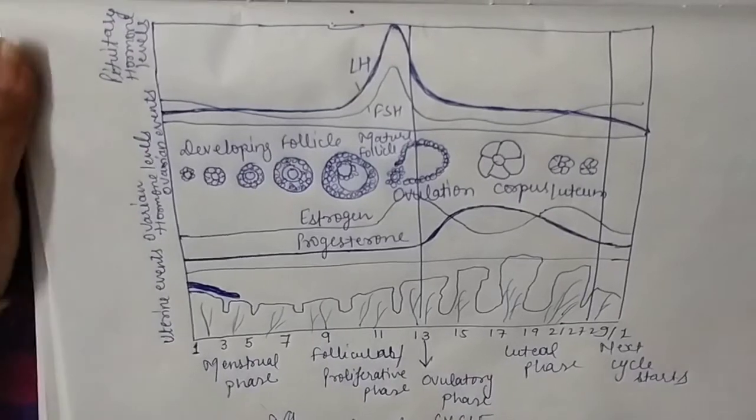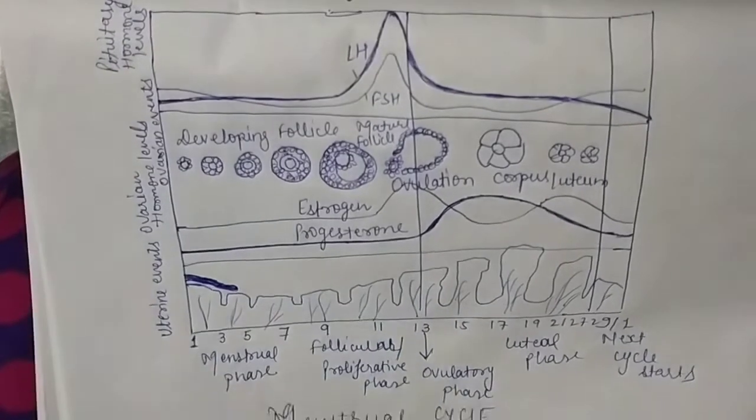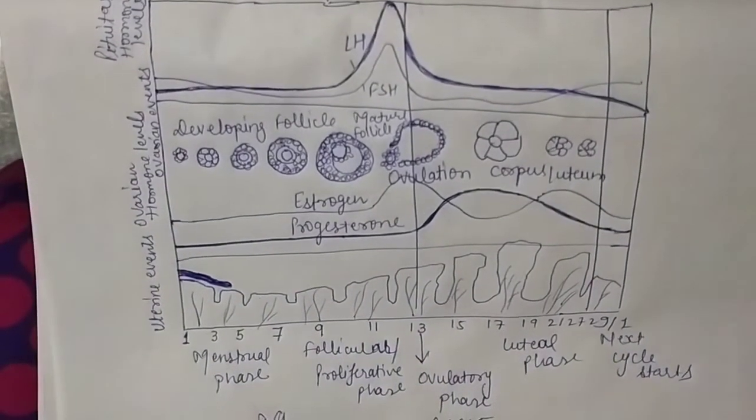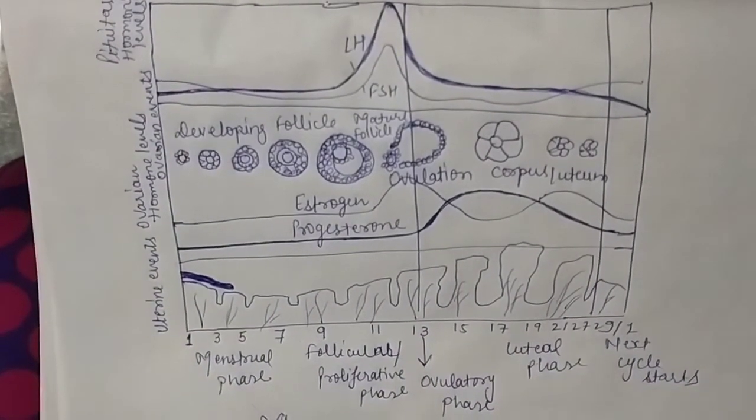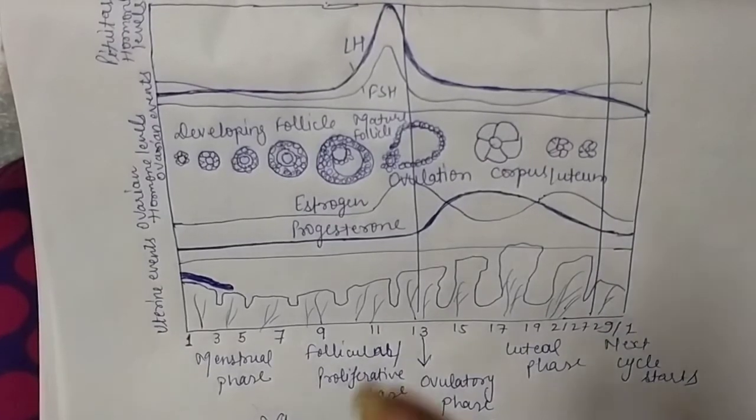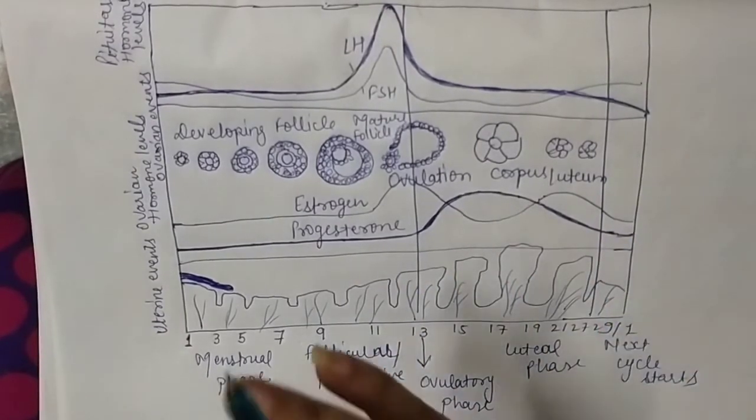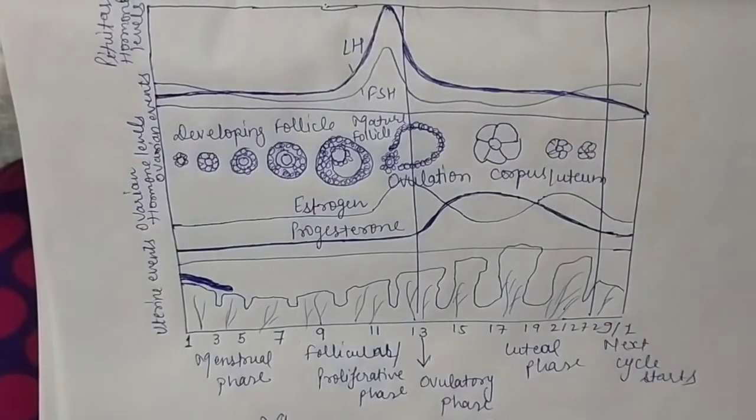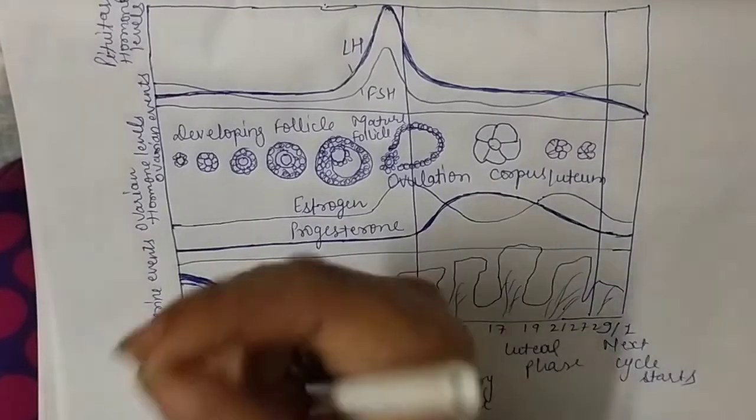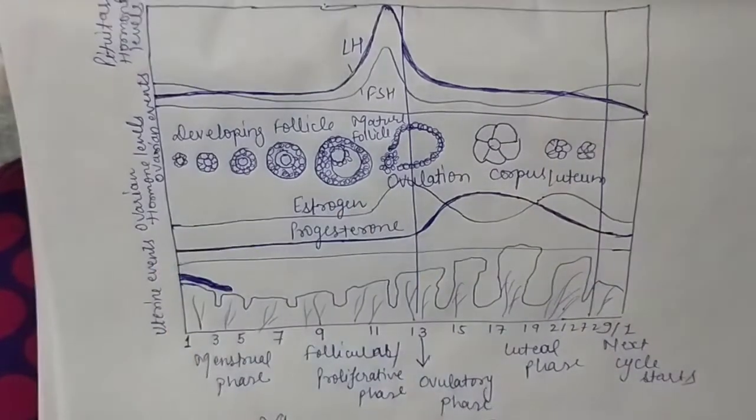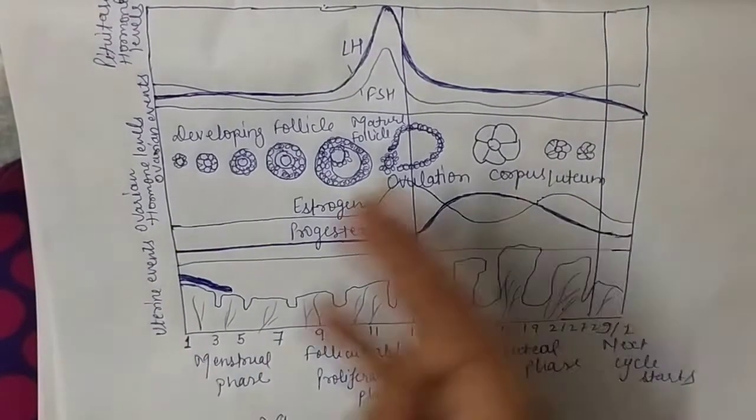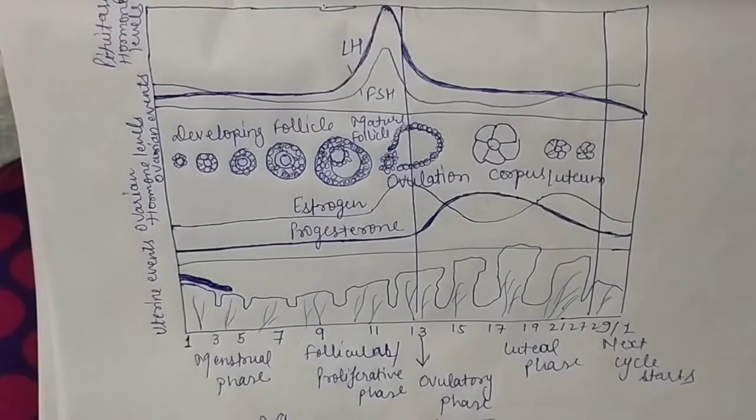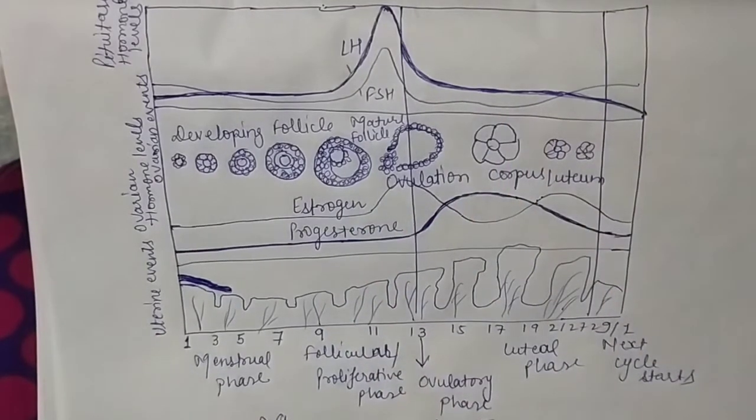This cycle is known as the menstrual cycle. The duration of this menstrual cycle is 28 to 29 days, and the phases of the cycle repeat from one cycle to another. This duration is known as the menstrual cycle, approximately one month.